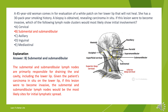The answer is B. Submental and submandibular. The submental and submandibular lymph nodes are primarily responsible for draining the oral cavity, including the lower lip. Given the patient's carcinoma in situ on the lower lip, if this lesion were to become invasive, the submental and submandibular lymph nodes would be the most likely sites for initial lymphatic spread.